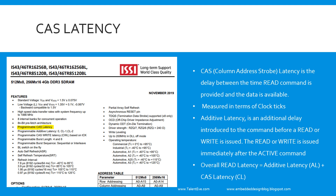Column address strobe latency, in terms of nanoseconds, is around 5 to 10 nanoseconds across different chipsets. However, the measuring parameter commonly used is clock ticks — the number of clock cycles. That is why you see parameters like CAS 6 or CAS 7, which we will discuss in more detail later.